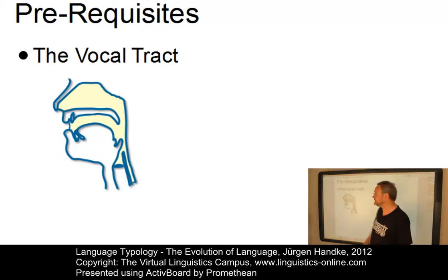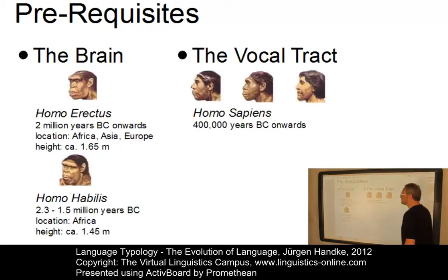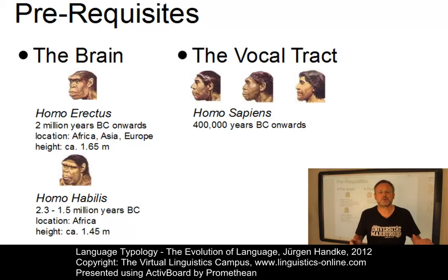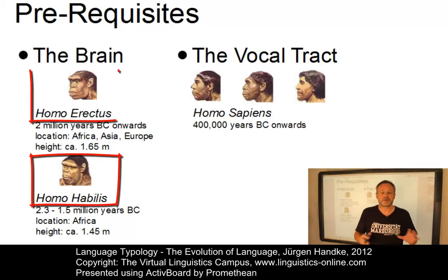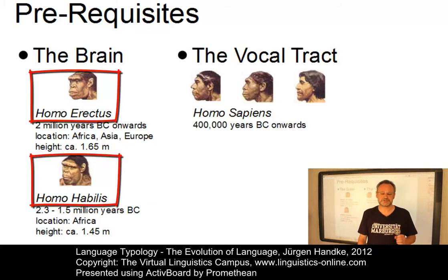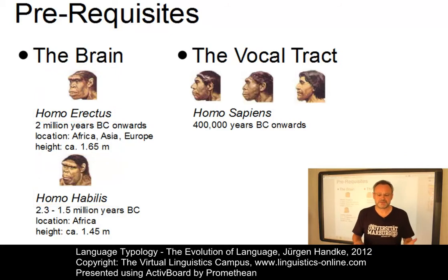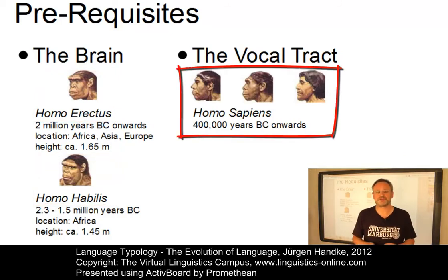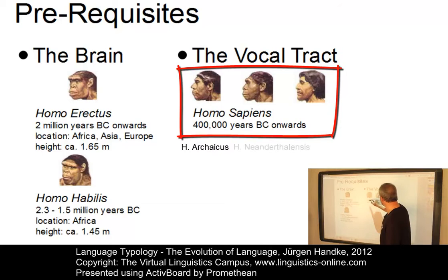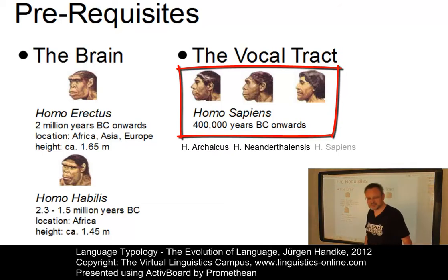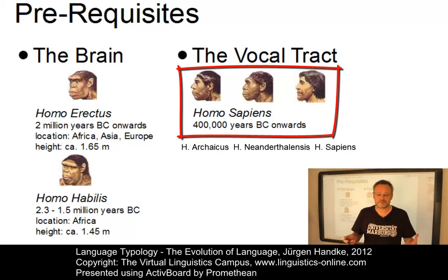Anthropologists have collected evidence that from about two million years before Christ onwards, Homo habilis and Homo erectus had developed a brain fit for basic linguistic tasks. And with the advent of Homo sapiens at around 400,000 years before Christ, from Archaicus via Neanderthalensis to Homo sapiens himself, a vocal tract gradually became ready for the use of some sort of speech.